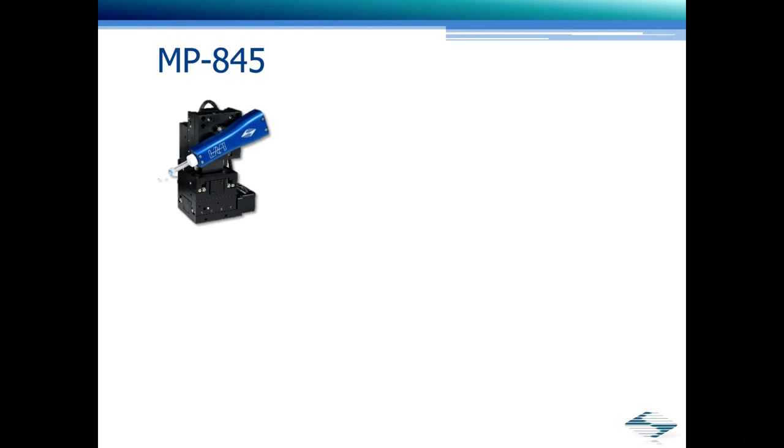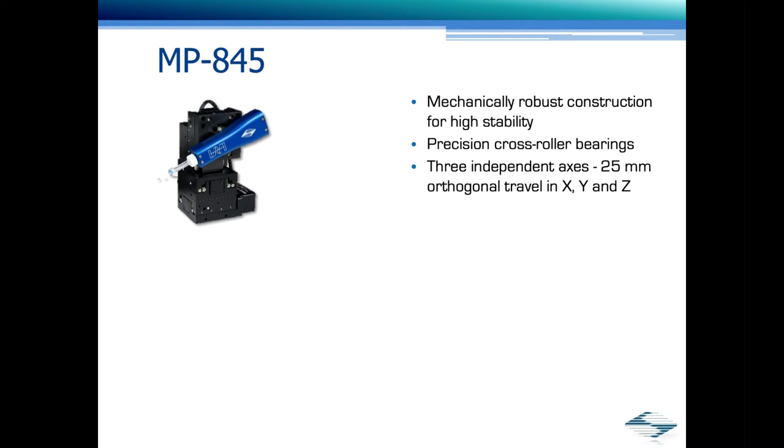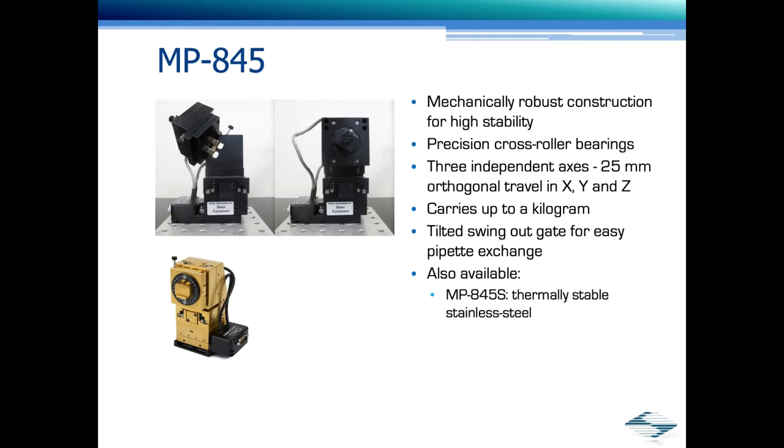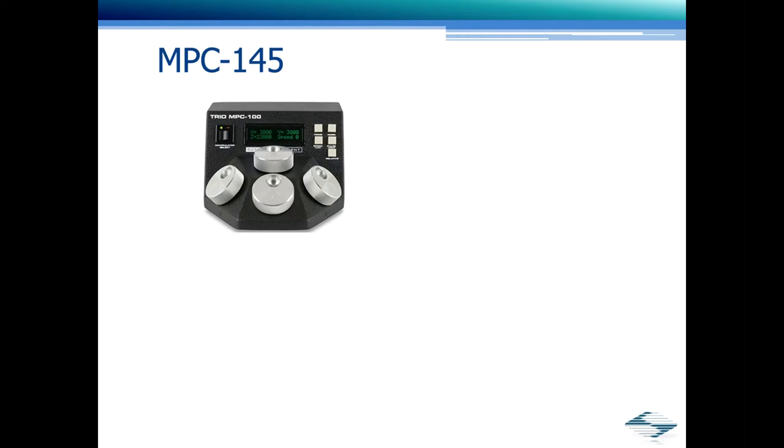In this setup, we used an MP845 manipulator, which is one of our newest manipulators. This manipulator is mechanically robust for high stability. Uses precision cross roller bearings. Has three independent access with 25 millimeter travel. Can carry up to a kilogram. Has a tilted swing out gate for easy pipette exchange. This is also one of the reasons we used it on this setup. Also available in the MP800 family is an MP845S, which is a stainless steel version, which is extremely thermally stable, and a narrow format MP865. The MP845 is controlled by the MPC-200. But I want to mention the other controller options that are also available, and that is the MPC-145. The MPC-145 is an ROE with a built-in controller. It can support up to two mechanicals. You cannot daisy chain this controller.